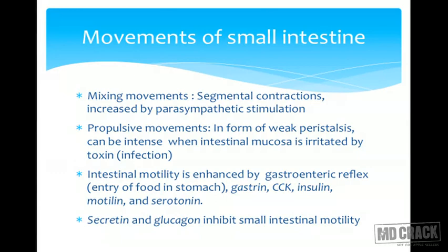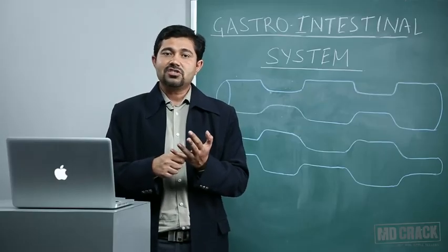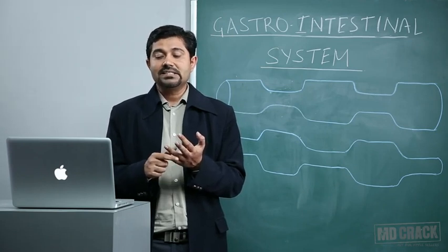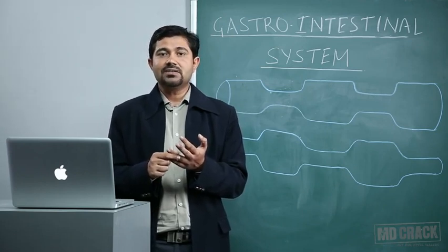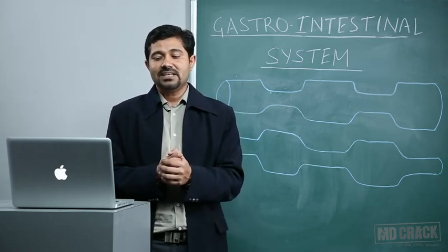Intestinal motility is enhanced by certain factors such as the gastroenteric reflex. Whenever food enters the stomach, the stomach sends signals to the intestine to increase motility so that more space can be created for the food - this is called the gastroenteric reflex. Gastrin, CCK, insulin, motilin, and serotonin are hormones that enhance motility of the intestine.